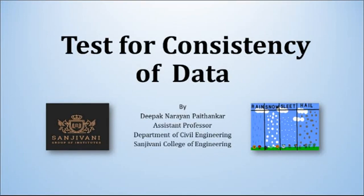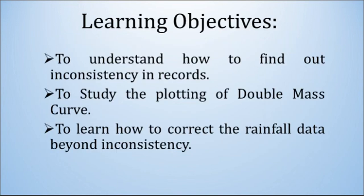Hello friends, welcome to the lecture on test for consistency of data. For any particular rain gauge station, we measure and record precipitation every day for several weeks, months, and years together. There are chances that due to any reason there is an inconsistency in keeping the record of the data. To avoid that, there is a technique called the double mass curve method that we are going to see in this lecture. The learning objective is to understand how to find out inconsistency in records, to study the plotting of the double mass curve, and to learn how to correct the rainfall data beyond inconsistency.